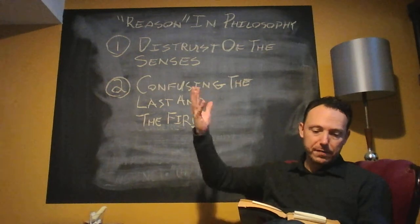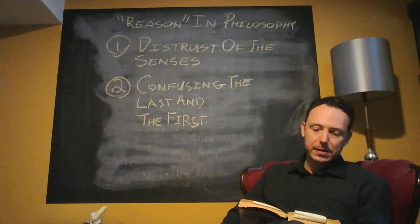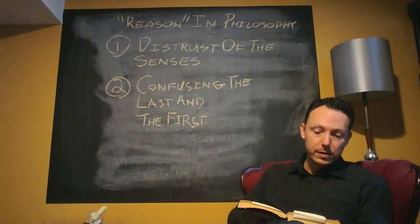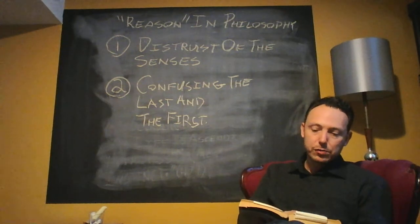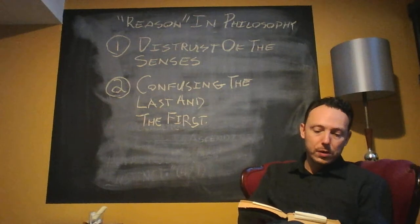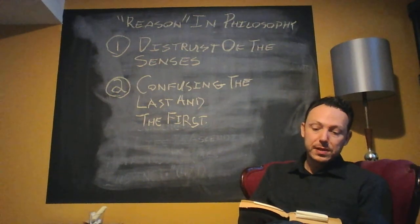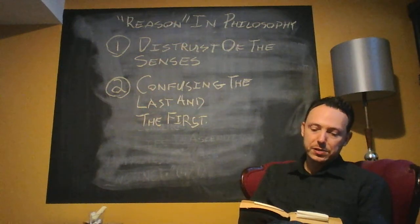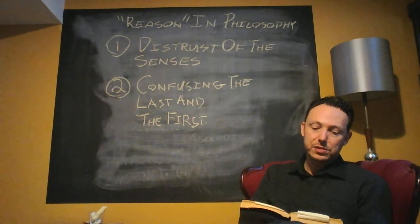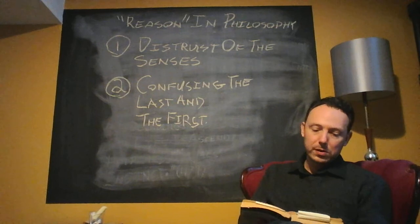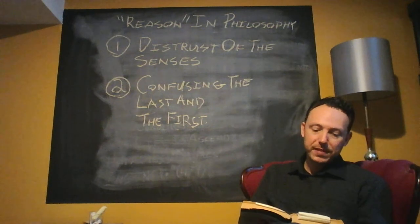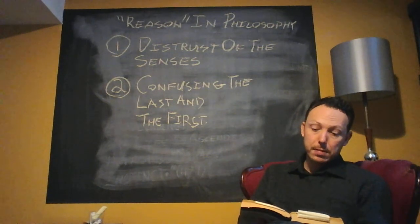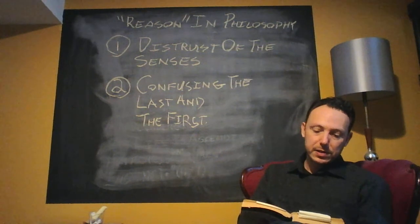Where's the deceiver? They, we found him, they cry ecstatically. It's our senses, these senses, which are so immoral in other ways too, deceive us concerning the true world. Moral. Let us free ourselves from the deception of the senses, from becoming, from history, from lies. History is nothing but faith in the senses, faith in lies. Moral. Let us say no to all who have faith in the senses, to all the rest of mankind. They are mob. Let us be philosophers. Let us be mummies. Let us represent the monototheism by adopting the expression of a gravedigger.